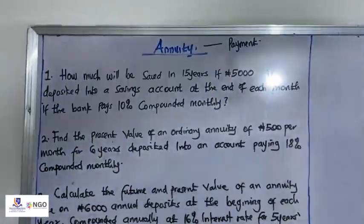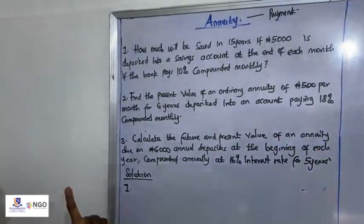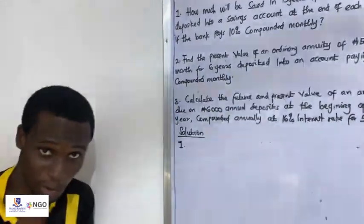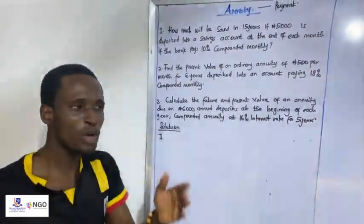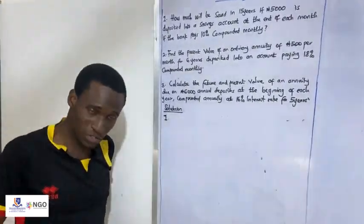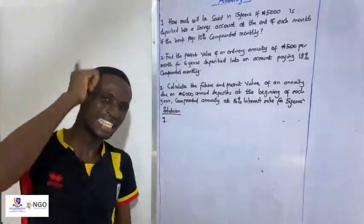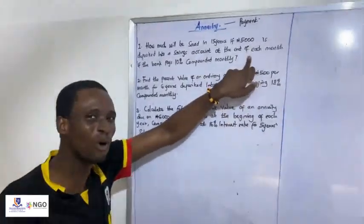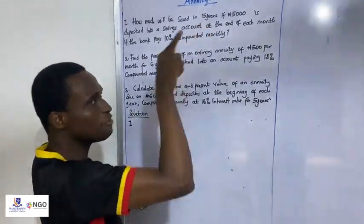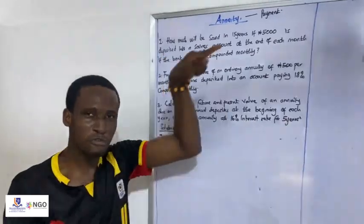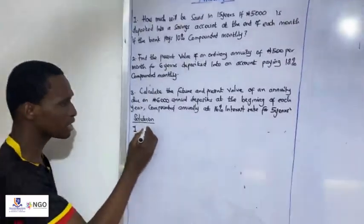Let's look at the first question: 'How much will be saved in 15 years?' Now, 15 years is not now — 15 years is later. So how much will be saved at the end of 15 years? If we start saving now in 2024, then 15 years from now is 2039. So how much will be saved at the end of 2039? Without stressing yourself, you already know this is an ordinary annuity. And is it future value or present value? It's future value — because 15 years is a future time. So the formula we are using is future value.